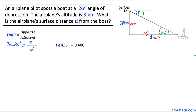We know that tangent of 26 degrees equals 0.488, so I am going to replace this part: 0.488 equals 3 divided by d. On the left hand side I can write underneath this 1, giving us the fraction 0.488 over 1.